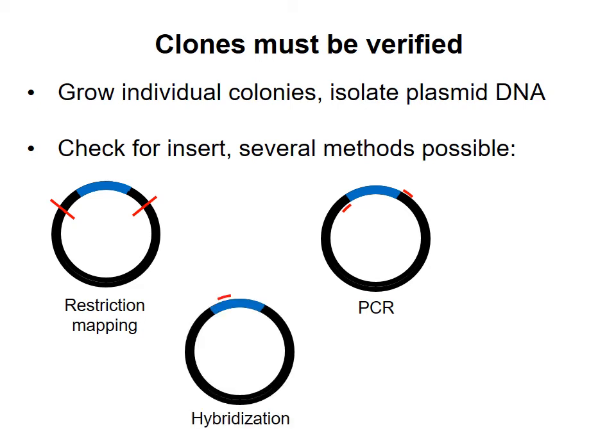A third way to check for the presence of the insert is to denature the plasmid and incubate it with an oligonucleotide probe specific to the insert sequence. This could be done by southern blotting, for example. If the probe binds to the plasmid, then that suggests that the insert is present. However, none of these three methods guarantees that the insert was incorporated into the plasmid in exactly the way you wanted, without any errors. Just because an insert of about the right size is present does not mean that something unexpected, like a mutation, didn't happen at some point in the process.